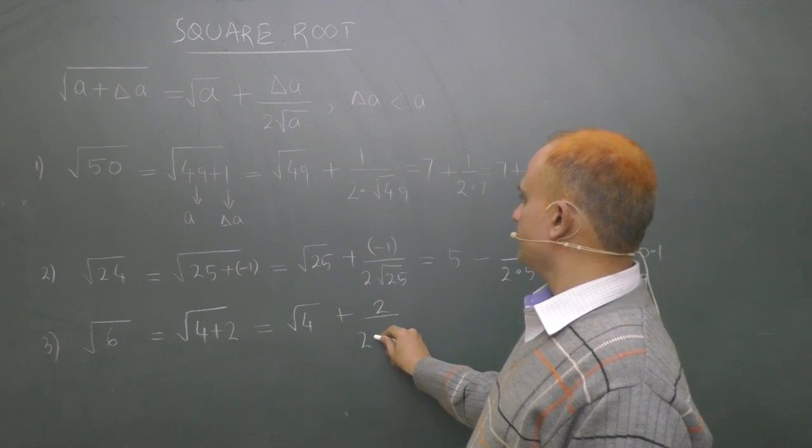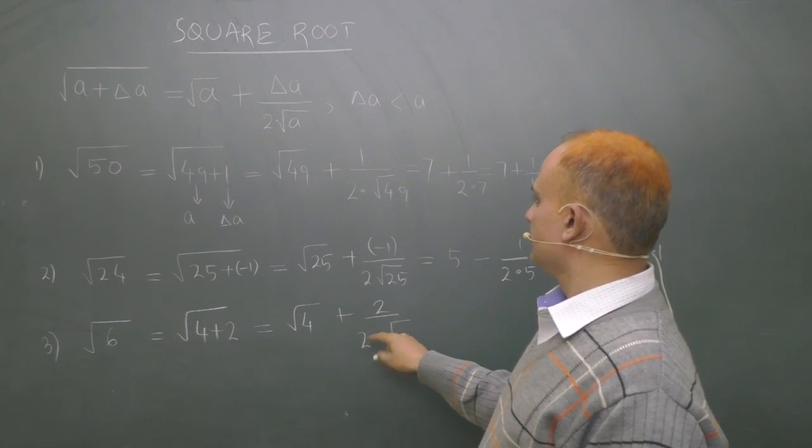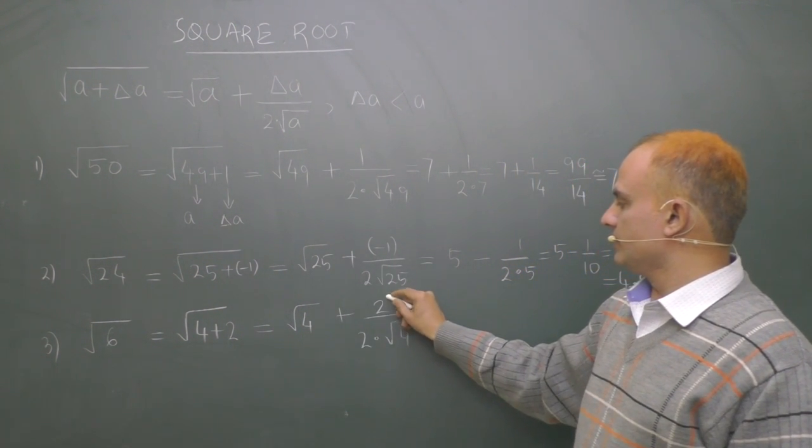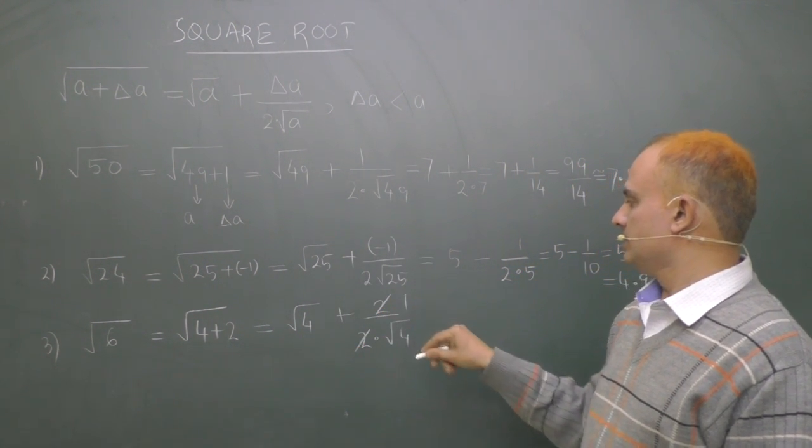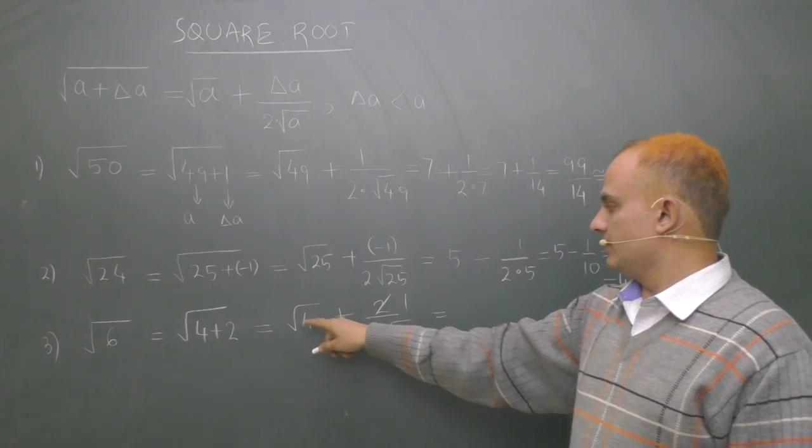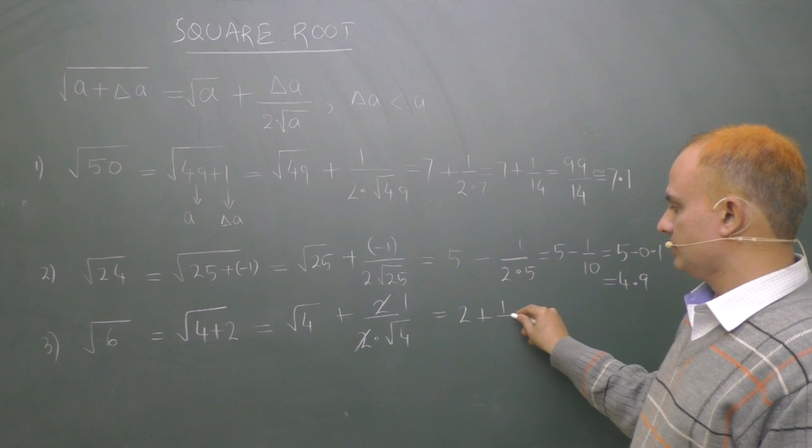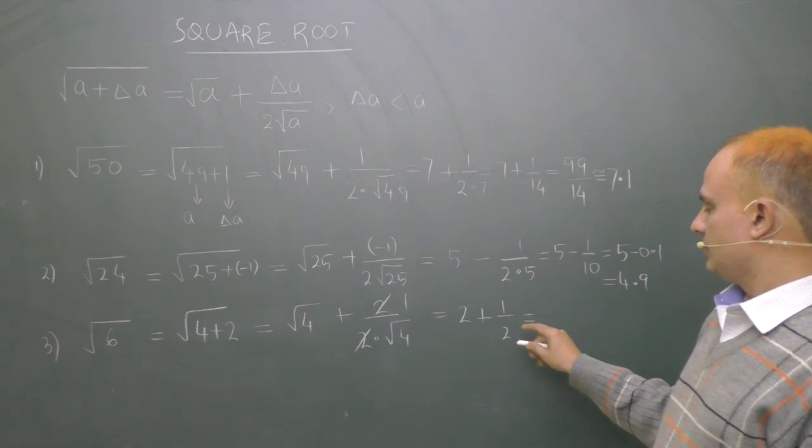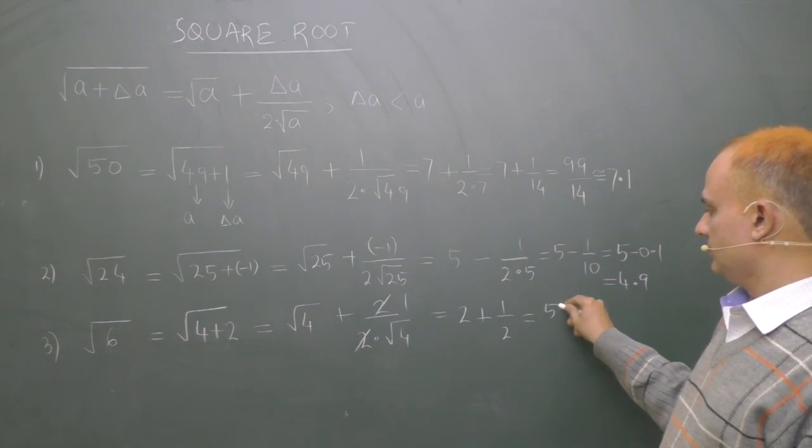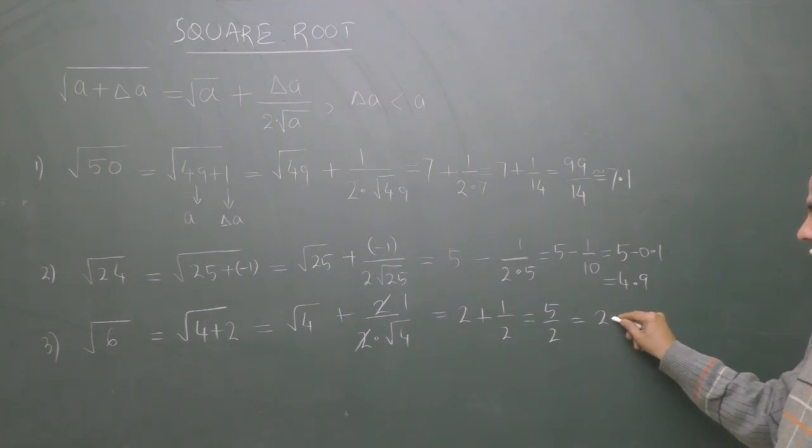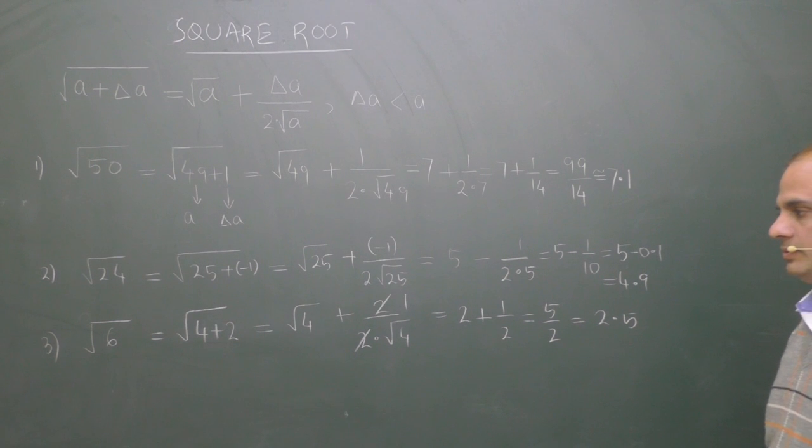Root of 4 plus delta A is 2, 2 upon 2 times square root of A, square root of 4. 2 can be cancelled. Root over 4 is 2 plus 1 upon 2, 2 plus 1 is 5 by 2. You can divide 5 by 2. So you will find answer is 2.5.